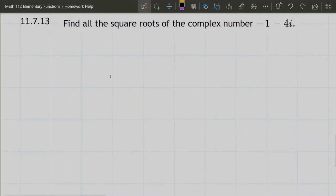Next question: find all the square roots of the complex number -1 - 4i. I chose this one because it's not going to have a nice angle; we're not going to be able to just guess this angle. So what do we do?